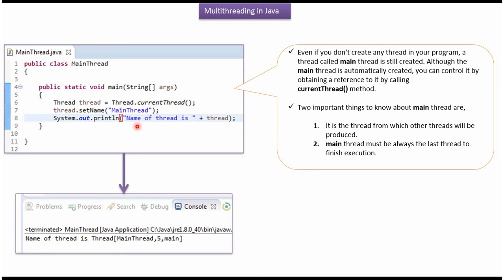Even if you don't create any thread in your program, the JVM will create a main thread. From the main thread, other threads will be created. The main thread must always be the last thread to finish execution.